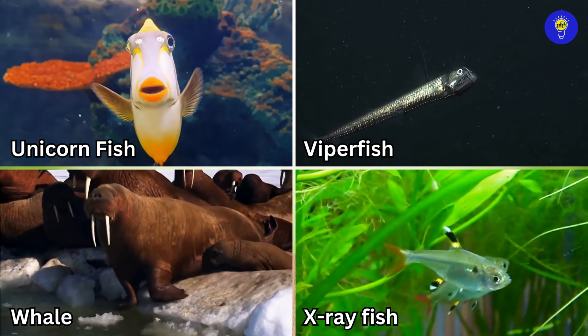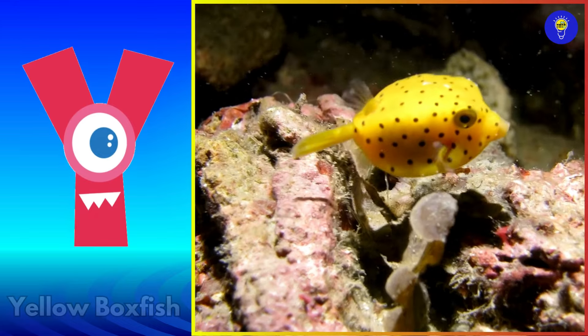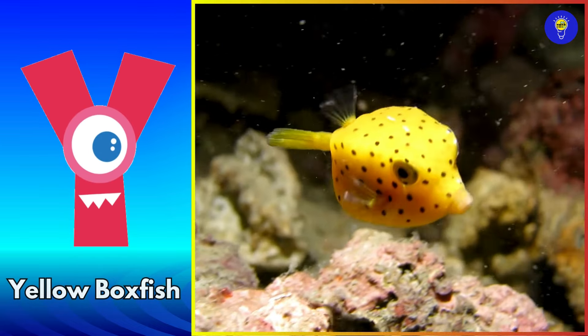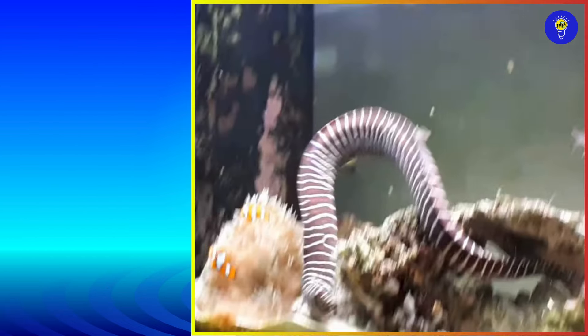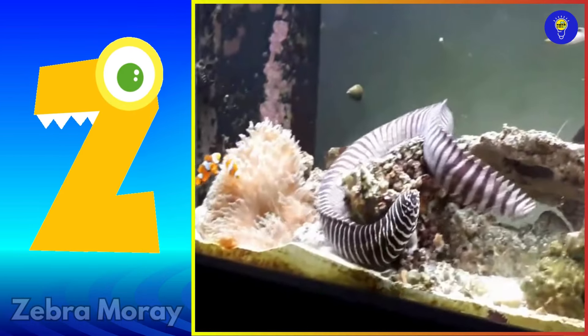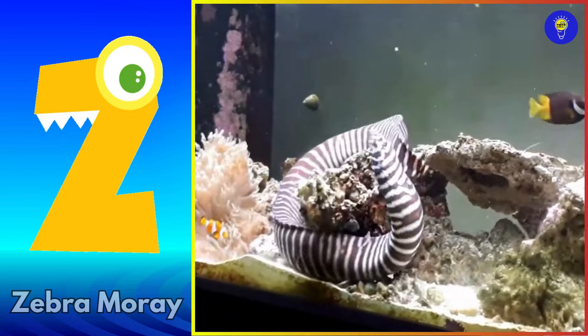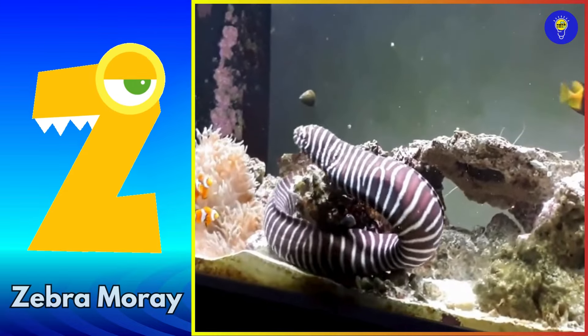Y is for yellow boxfish. Yuh, yellow boxfish. Z is for zebra moray. Z, zebra moray.